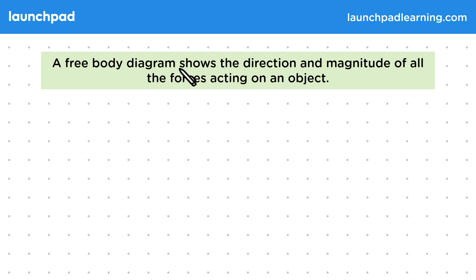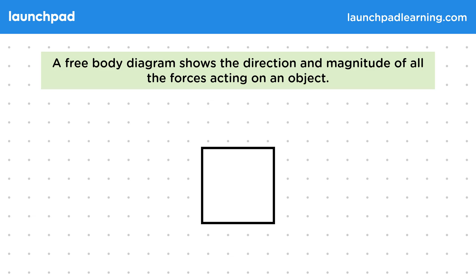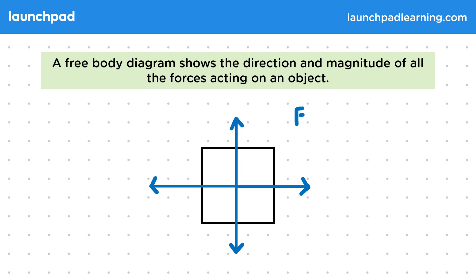A free body diagram shows the direction and magnitude of all the forces acting on an object. On this object there are four forces acting in four directions. Remember that a vector is a quantity that has both magnitude and direction, and we can represent vectors as arrows. So here we can use arrows to show our force vectors.